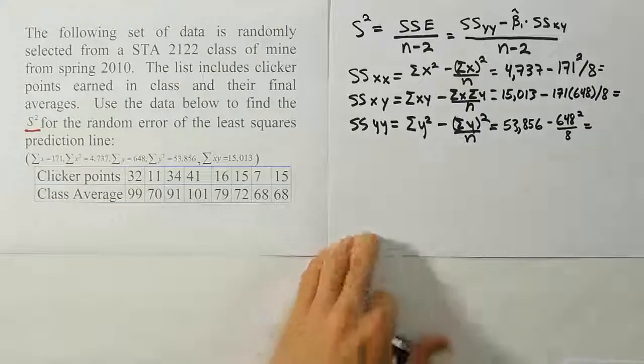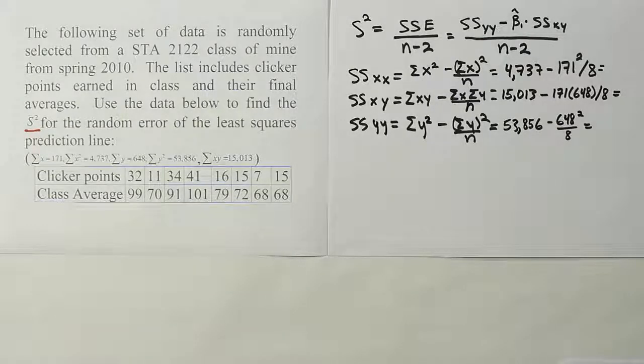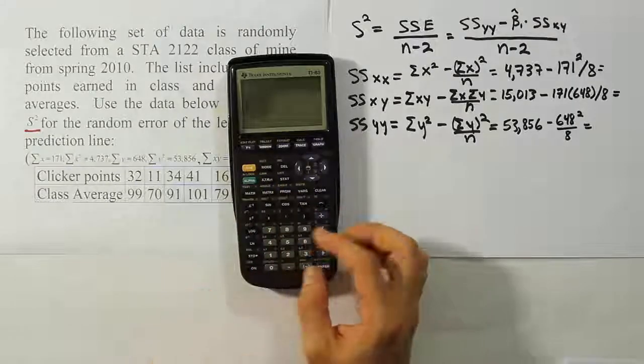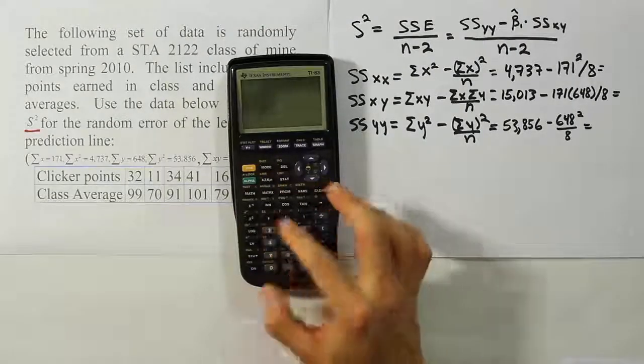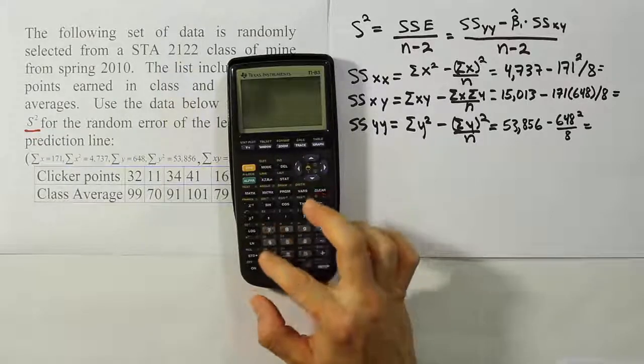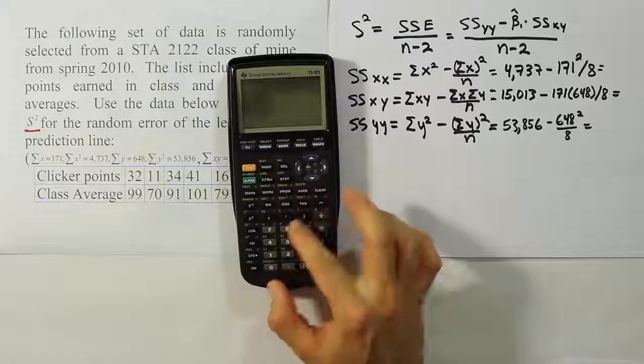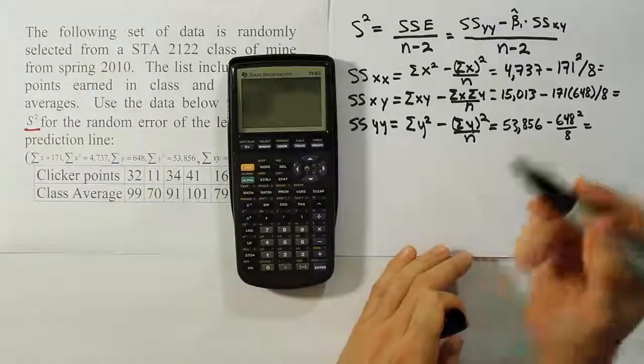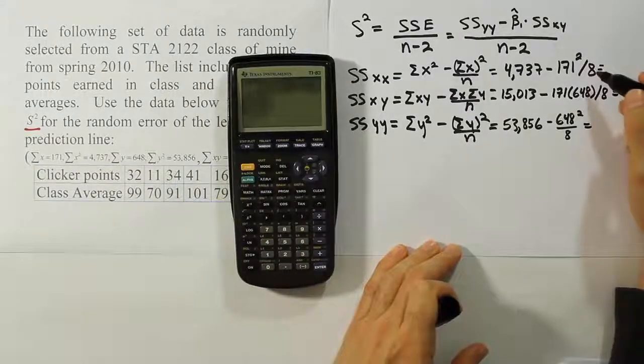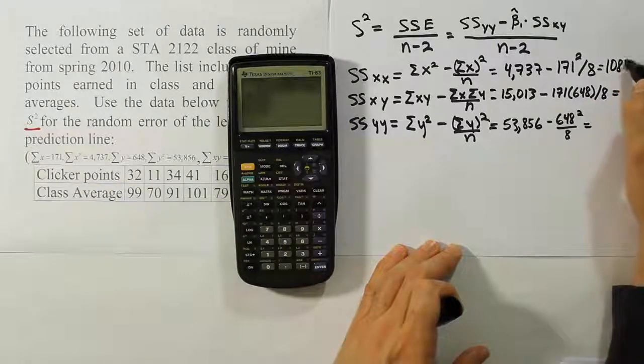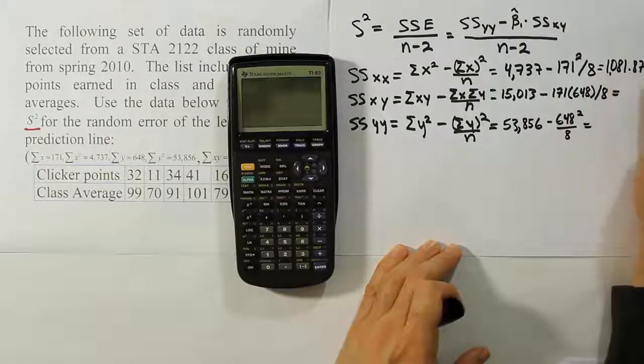So let's work out these values and evaluate their totals. So 4737 minus 171 squared divided by 8. And when we do that for SSXX we get the answer 1081.875.